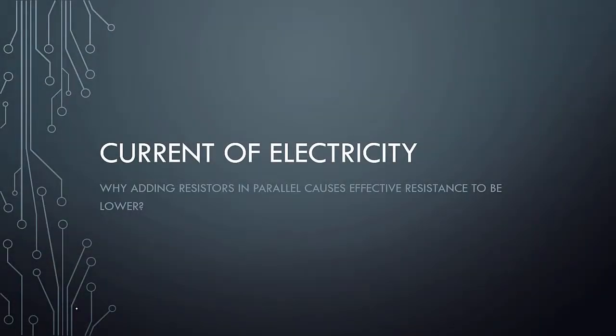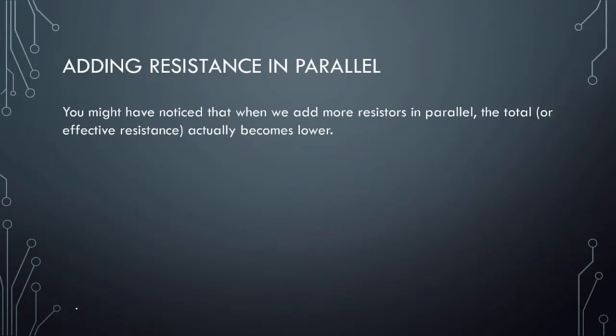In this current electricity lesson, we explore why adding resistance in parallel causes effective resistance to be lower. You might have noticed that when we add more resistance in parallel, the total or effective resistance actually becomes lower.